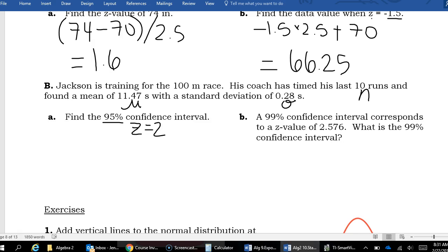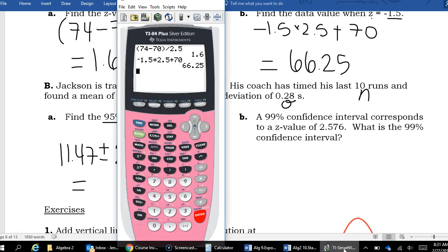So I can sub all these values into my formula and then be able to say I am 95% sure that on race day, Jackson will run between blank and blank seconds. So let's start with the mean 11.47 plus and minus the Z score times the standard deviation divided by the square root of the number of practices. So on my calculator, I'm going to type this once with a plus and once with a minus, 2 times 0.28 divided by the square root of 10.